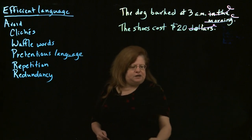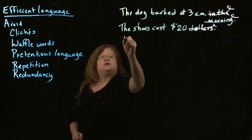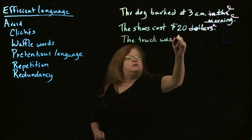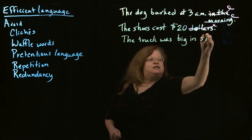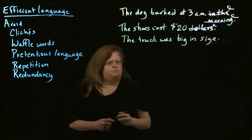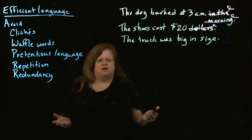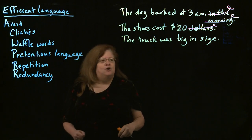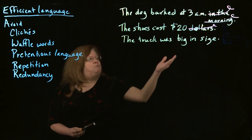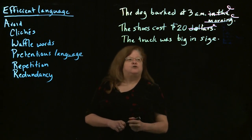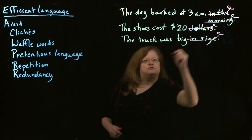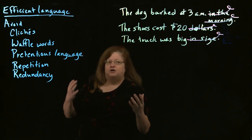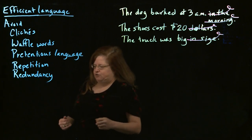I'll also see things like 'the truck was big in size.' Big is a size. Are we trying to say instead it was big in shape? Big in color? So 'big in size' is once again a redundancy. You don't need these extra words. That's something to look at in your writing — if you've said the same thing twice and you don't really need to.